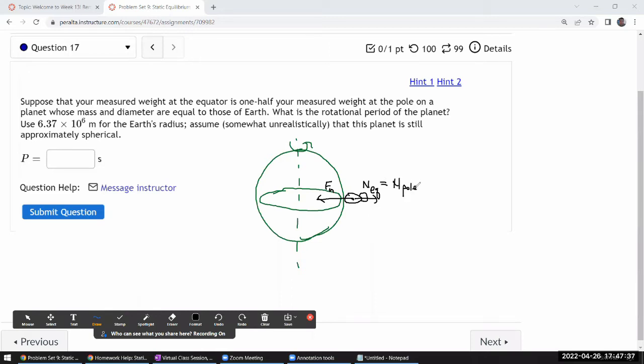So your measured weight at the equator is equal to the weight measured at the pole divided by two. That's what it's claiming. So for the similar person up here, there's still gravitational force pulling this person inward and there's going to be a normal force supporting the person up.